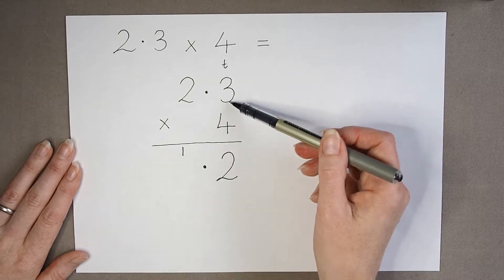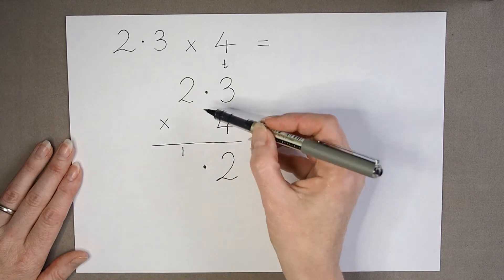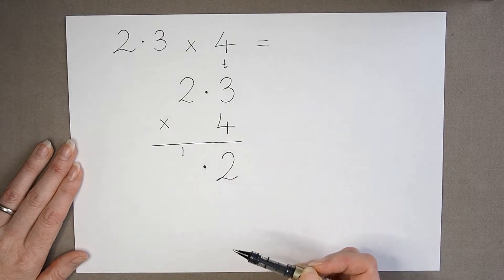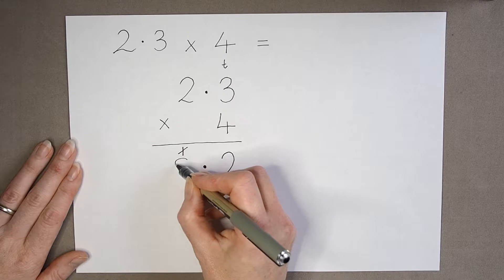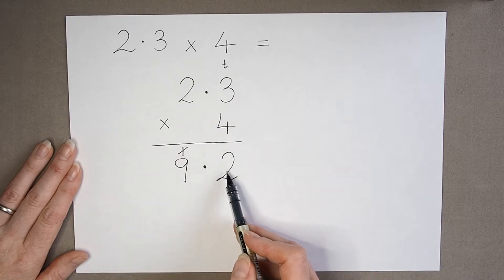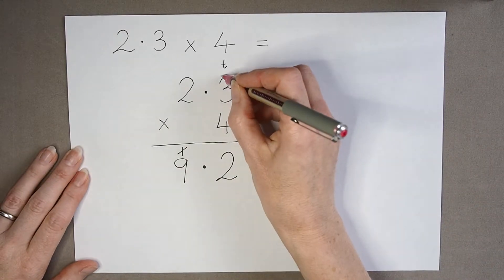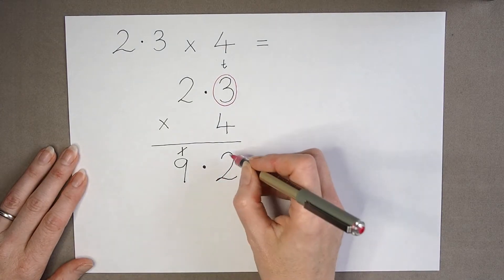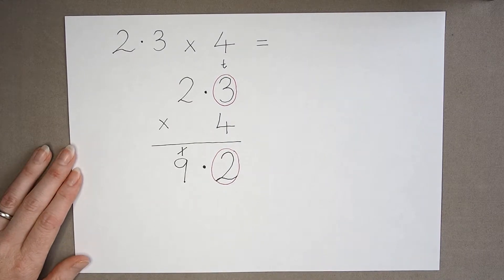4 times 3 is 12, so we write the 2 and carry the 1. 4 times 2 is 8. And I've got that extra one to add on, so my answer is 9.2. So if I have tenths in the question, I'm going to have tenths in the answer as well.